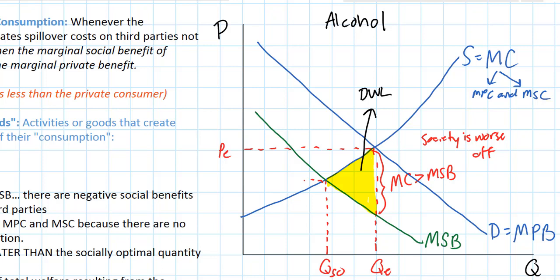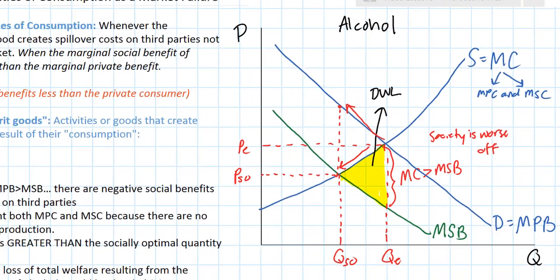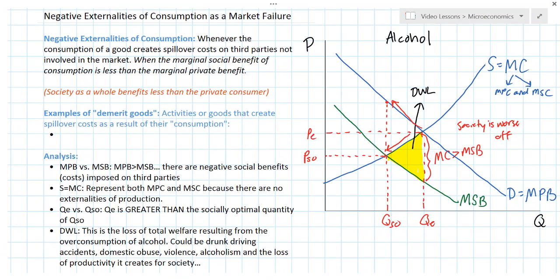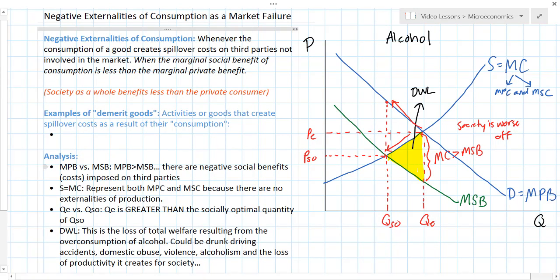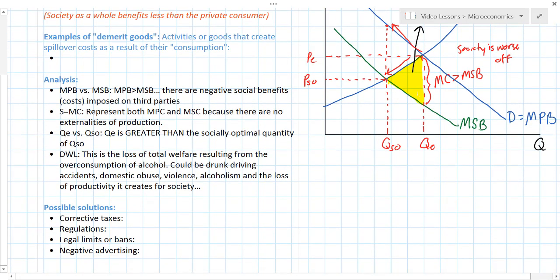There are actually two ways to look at this. If the socially optimal price, PSO, were lower, then a smaller quantity would be supplied of alcohol. Or you could go up to the private demand curve and indicate that if the price were higher, there would be a smaller quantity demanded of alcohol. This leads into a discussion of possible solutions: either raise the price so consumers demand less alcohol, or reduce demand for alcohol, which would lower the price and lead producers to produce less. Either way, we can now move on to some possible solutions to negative consumption externalities.